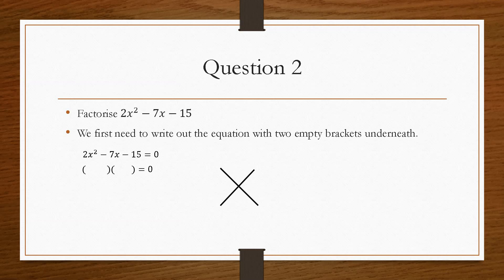Two things that will times together to give us 2x squared. In this case, 2x times x. And remember, the left hand side of the cross corresponds to the first term in each bracket, respectively. The top of the cross being the first bracket, the bottom of the cross being the second bracket.